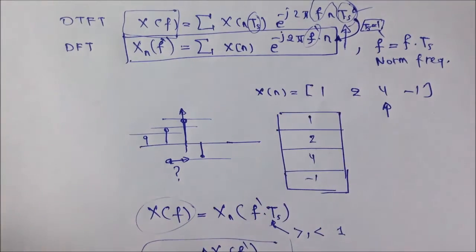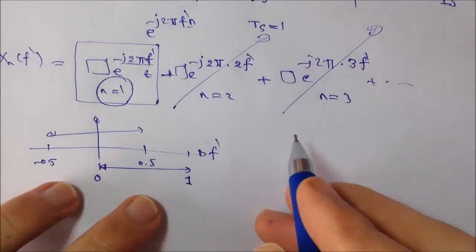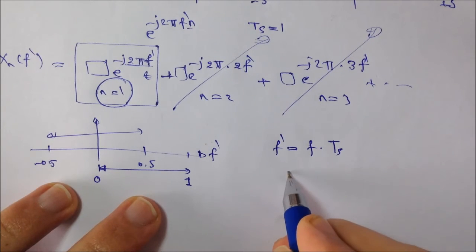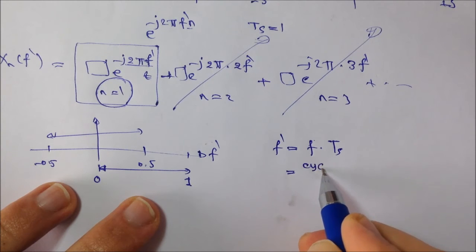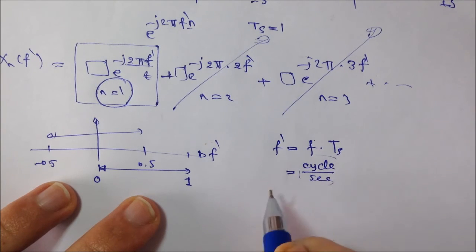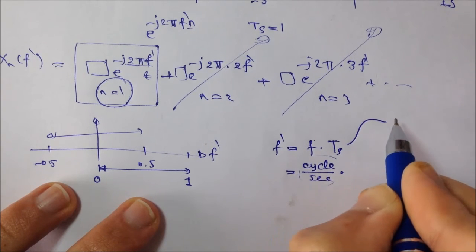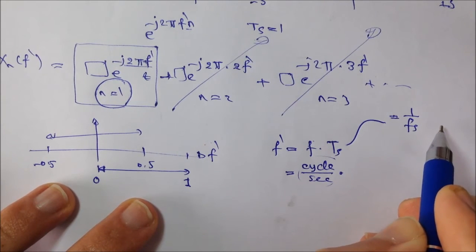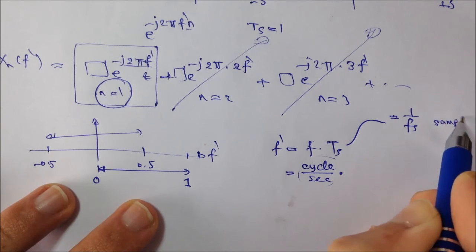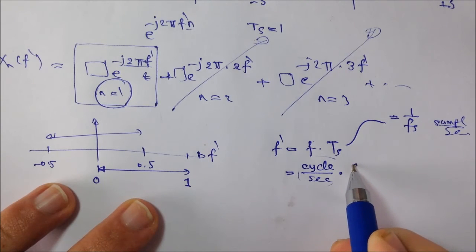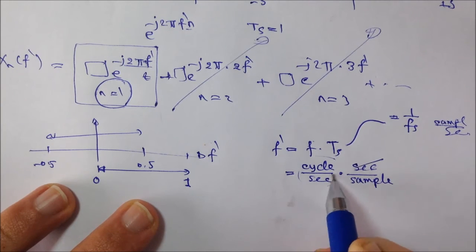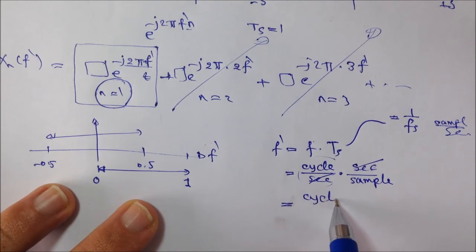So, we have an interesting point. What's the unit of f prime, the normalized frequency? Well, actually, as f prime, normalized frequency, is defined as f dot Ts, this means, as the frequency is measured in hertz, which is actually cycle per second, and then we have Ts, which is the reciprocal of fs, the sampling rate, which is measured in sample per second. So, Ts is measured in second per sample. And then we end up with cycle per sample.